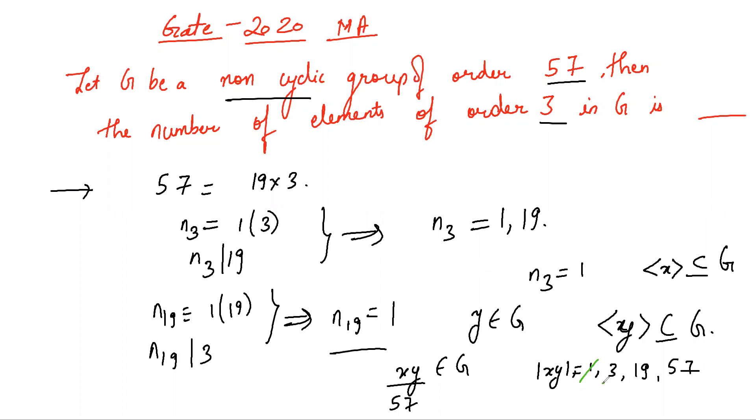It cannot be 3 because if it were 3, xy will generate a group of order 3. So xy will be an element of the group generated by x, which would imply y would be an element of the group generated by x, which is not the case since y has order 19 and x has order 3.